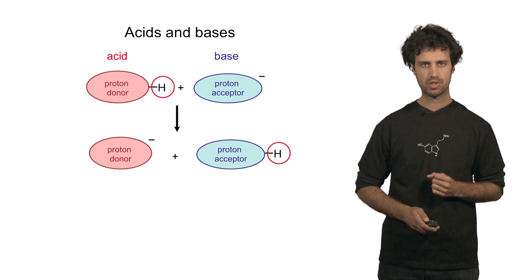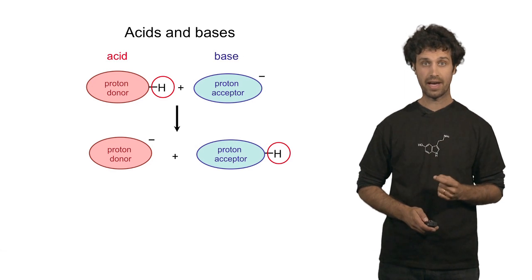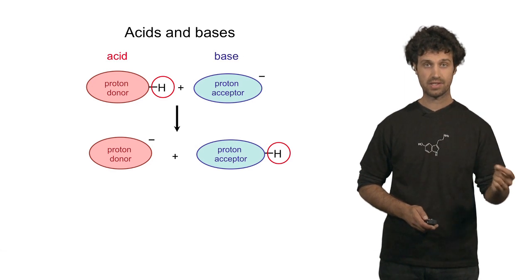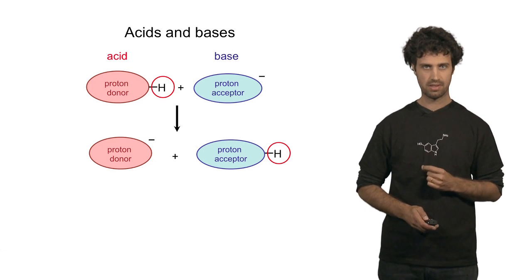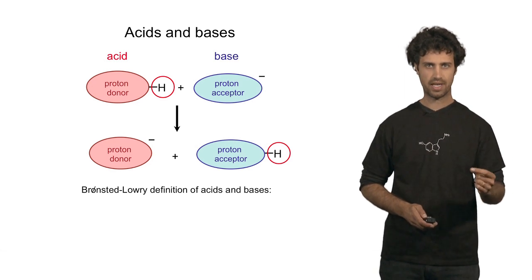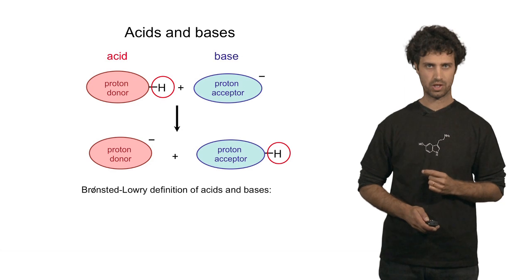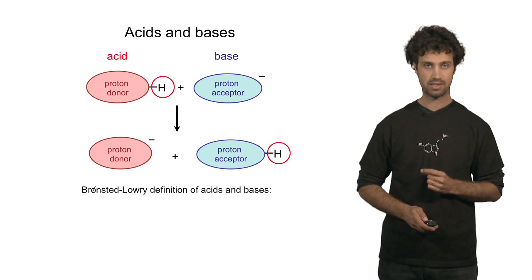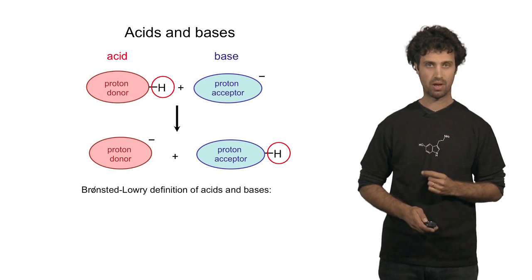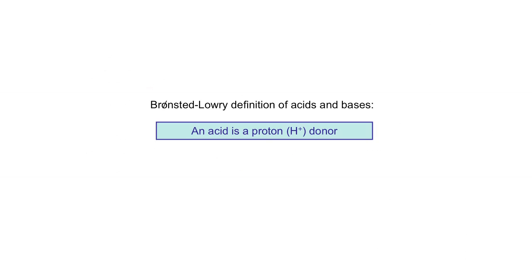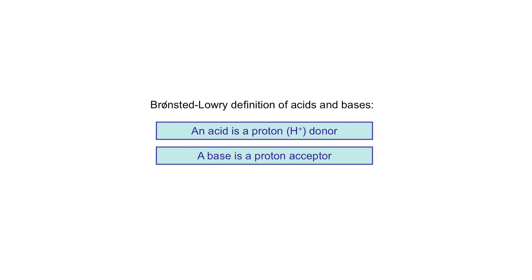Based on this chemistry, we can define acids and bases. The Brønsted-Lowry definition of acids and bases is as follows: an acid is a compound that can donate a proton, and a base is a proton acceptor.